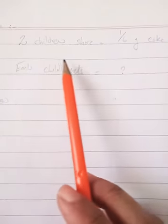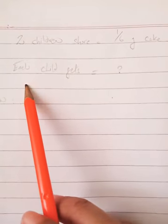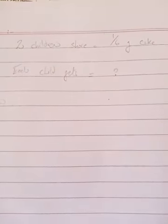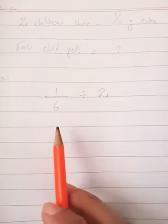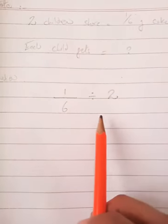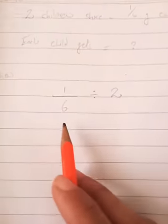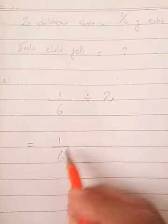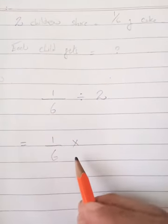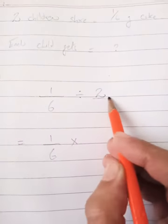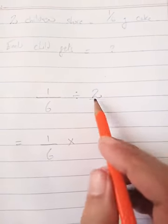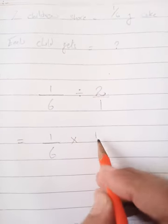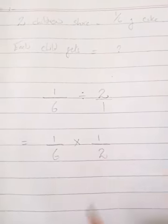Write the heading of solution. If two children are sharing something and we want to find the share of one child, we will do division. So one upon six divided by two — why two? Because there are two children. In the next step, we write one upon six, then the divide sign changes to a multiplication sign and we take the reciprocal of the second fraction. It was two upon one; now it becomes one upon two.